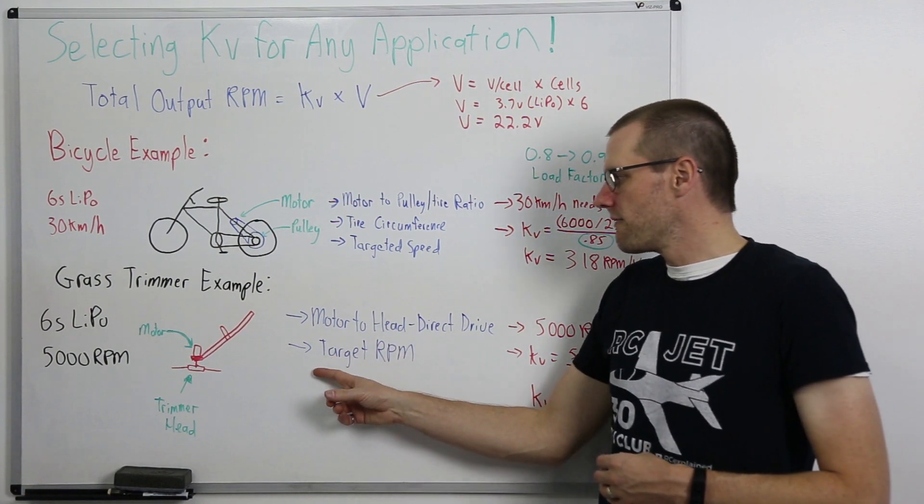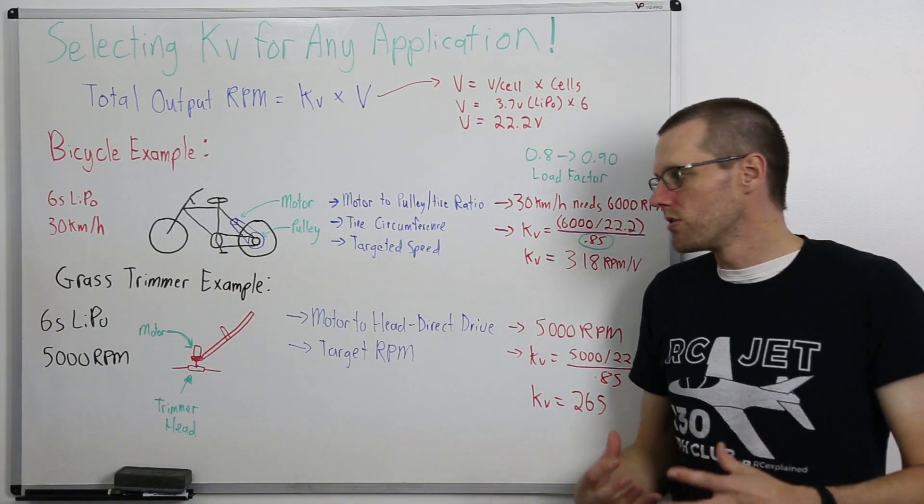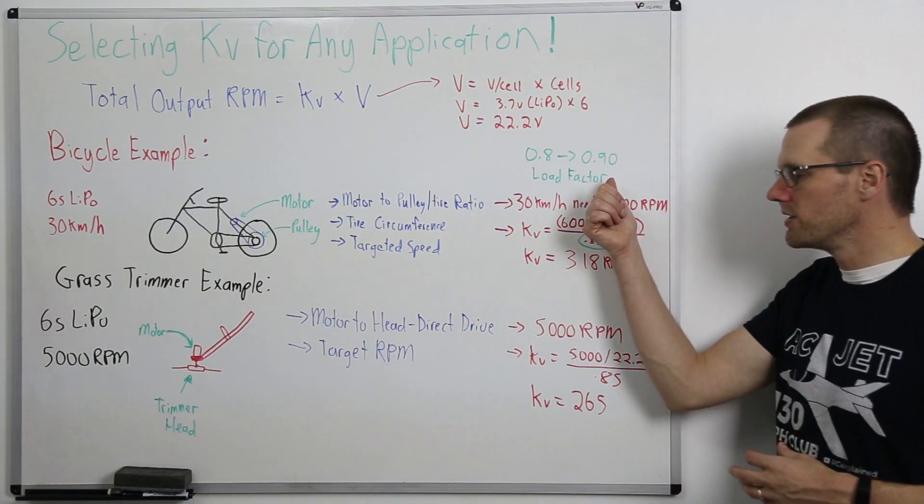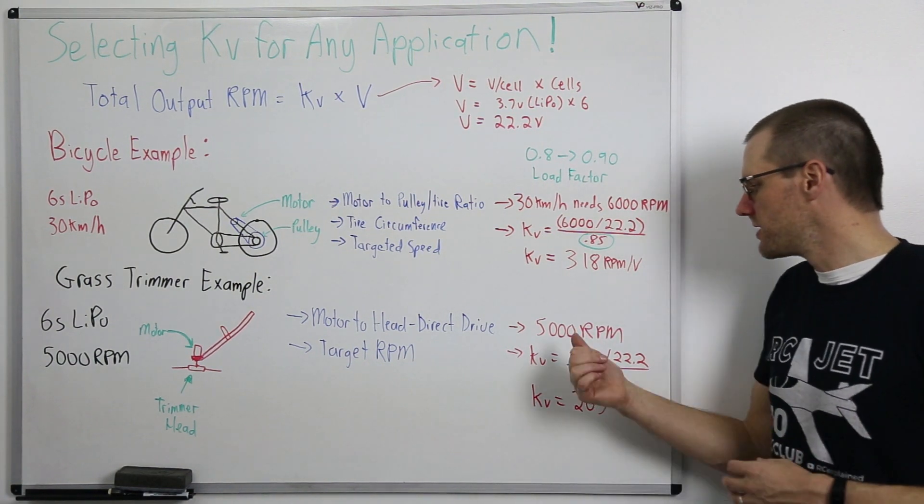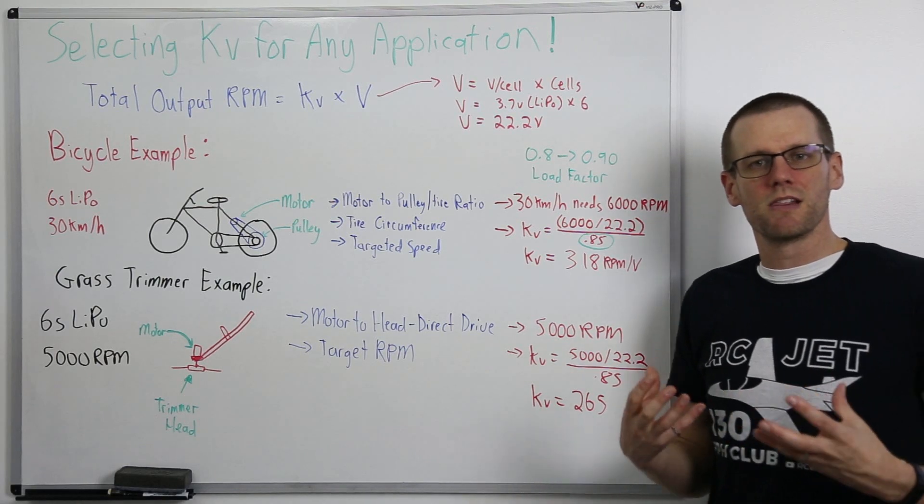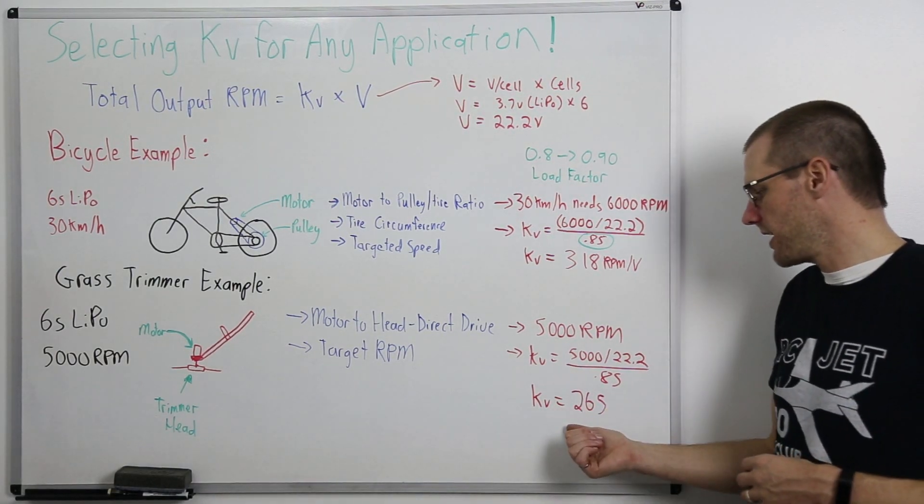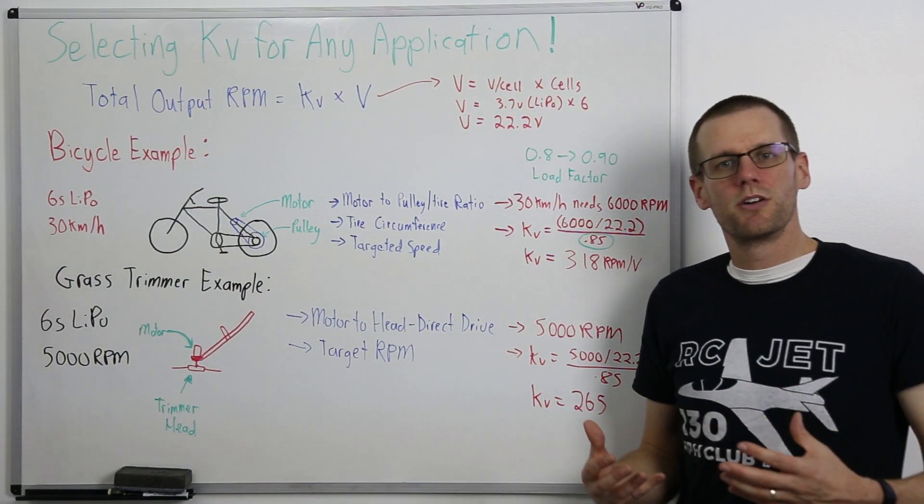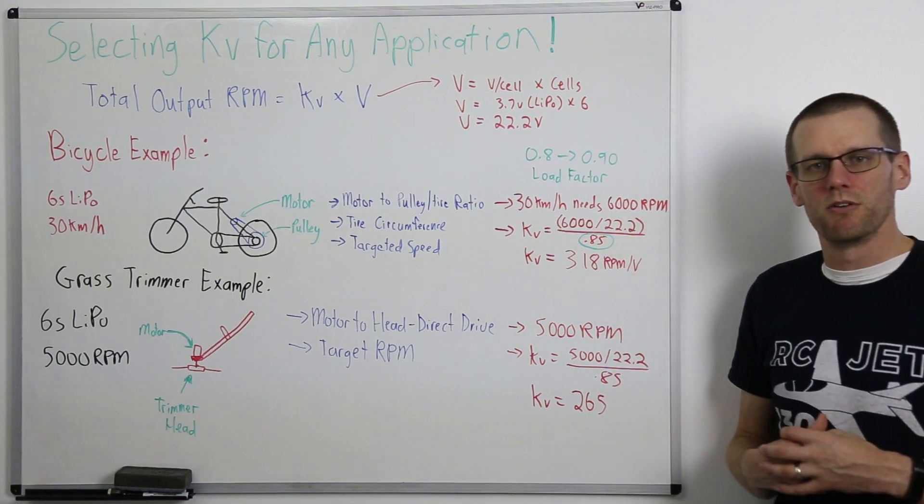So now that we have our target speed as to what we're looking for from our trimmer we just go through the exact same calculation that we did above. We take the 5,000 divide it by our 22.2 and then divide it by that load factor and we get a kV is equal to 265 rpm per volt.